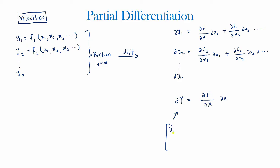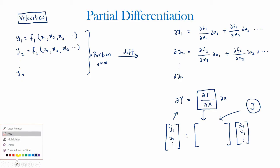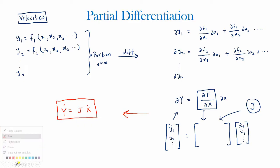You would have ẏ1, ẏ2, and so on equal to a matrix containing all the coefficients — the derivatives of the function — times a matrix with the derivatives of the variables. This matrix ∂f/∂x would be the Jacobian of the system. We can generalize this to the equation ẏ = J·ẋ, and you should remember this equation as it will help you when finding the Jacobian.